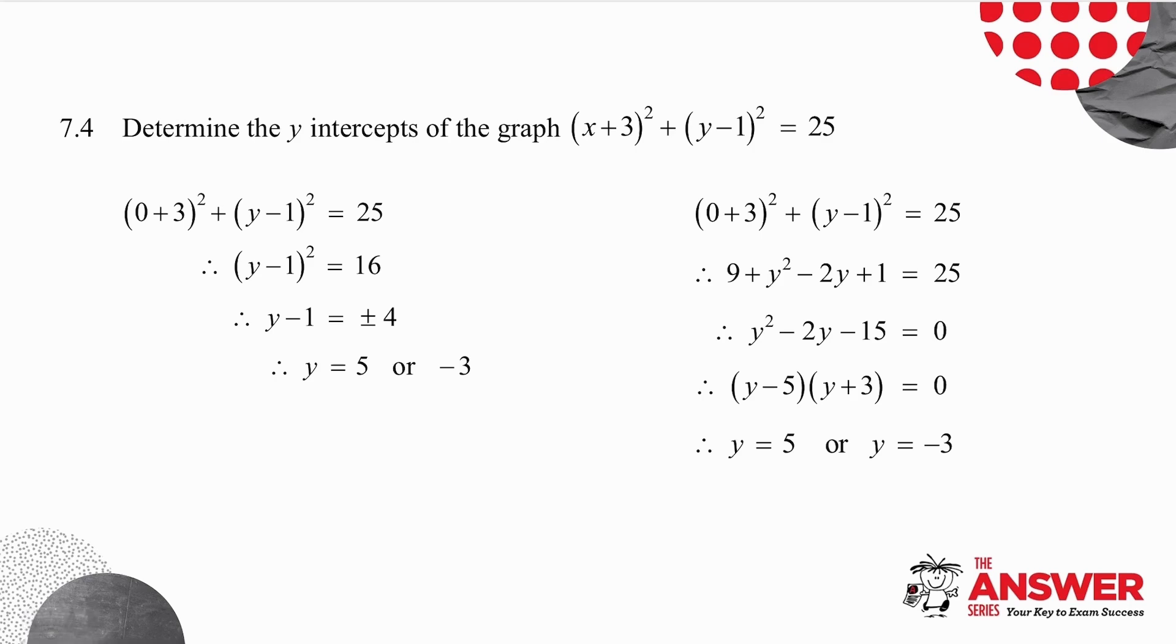What do you know about the y-intercepts of a graph? Well, at a y-intercept, you know that x is equal to 0. So I make x equal to 0. And then I can do this in two ways. Either I can say 0 plus 3, all squared, is 9. Take it across to the other side. And I get 25 minus 9 is 16.